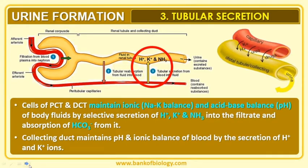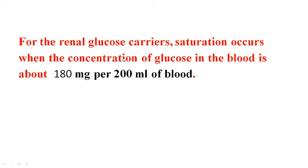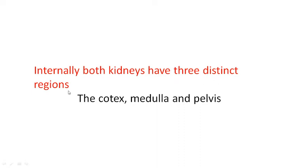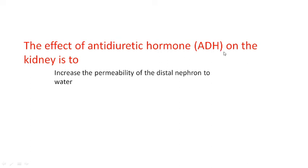So the three steps — glomerular filtration, tubular reabsorption, and tubular secretion — take place in the formation of urine. For renal glucose carriers, saturation occurs when the concentration of glucose in the blood is about 180 mg per 200 ml of blood — a very important phenomenon. Internally, both kidneys have three distinct regions: the cortex, medulla, and pelvis. The antidiuretic hormone (ADH) influences the kidney to increase the permeability of the distal nephron to water.